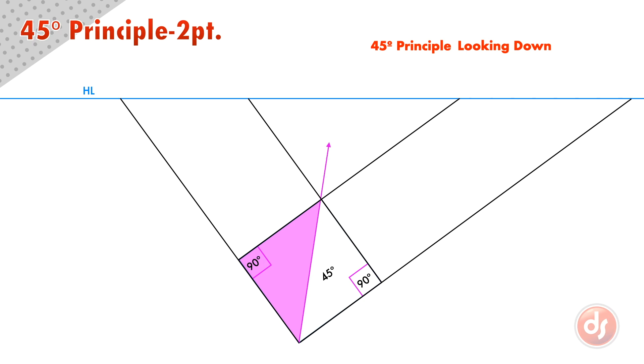The line that goes through the box from corner to corner meets the horizon at a 45-degree angle from the box, at what we call the 45-degree vanishing point.